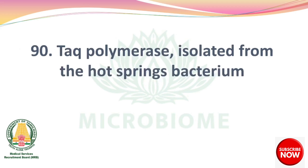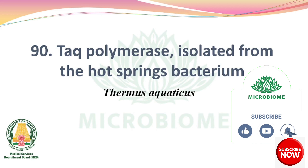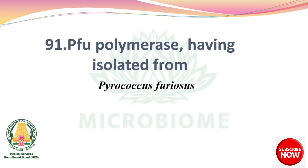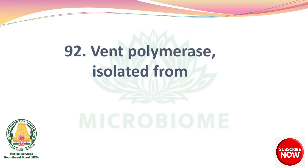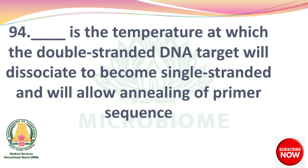Taq polymerase is isolated from the hot springs bacterium Thermus aquaticus. Pfu polymerase is isolated from Pyrococcus furiosus. Vent polymerase is isolated from Dermococcus littoralis. Dash using agarose or polyacrylamide involves separation of DNA, RNA, or protein molecules using an electric field — gel electrophoresis.